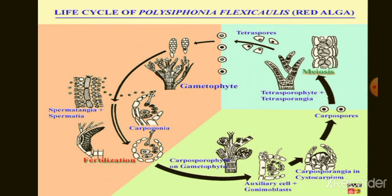Next, the life cycle. The life cycle of Rhodophyta is illustrated with Polysiphonia as an example. The male sex organ is known as spermatangia, which produces non-motile male gametes called spermatia. The female sex organ is known as procarp, and it has a carpogonium bearing a receptive structure called trichogyne. The egg is developed in the basal swollen part of the carpogonium.